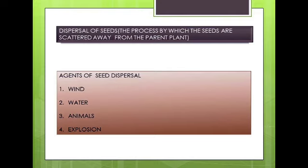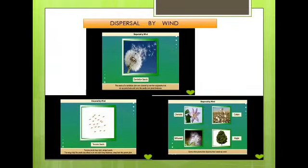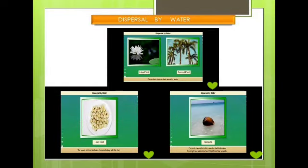In order to facilitate dispersal by different agents, many seeds and fruits have developed special features. The first agent is wind. The seeds of plants like cotton and dandelion are very light and have either wings or hair on them, which enable them to be easily carried away by wind. The second agent is water. Seeds or fruits of plants growing near or in water are either spongy or fibrous, enabling them to float. Water then carries them to different places — for example, coconut and lotus fruits are carried away by water.